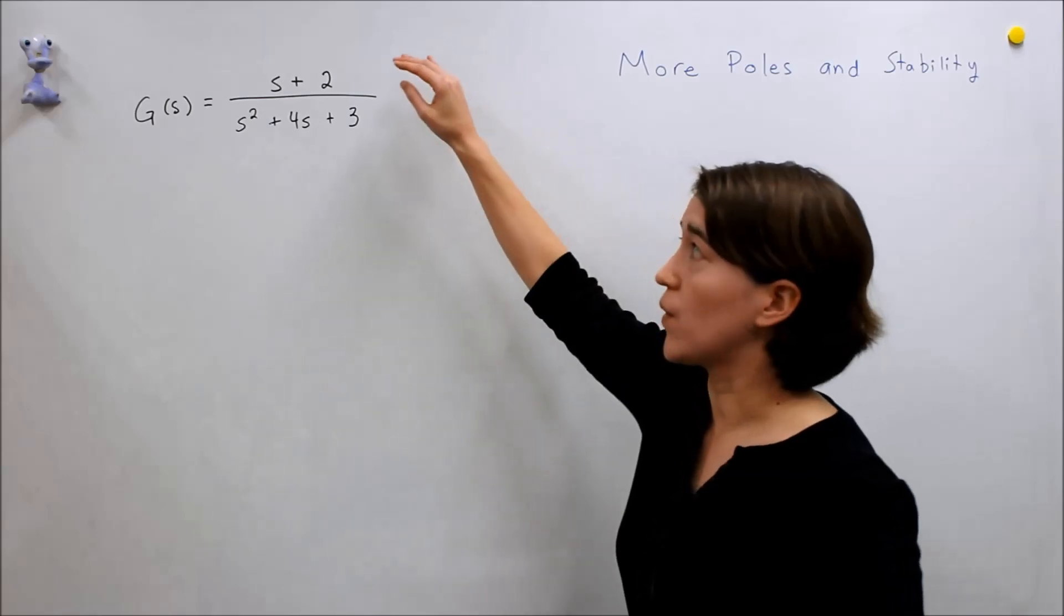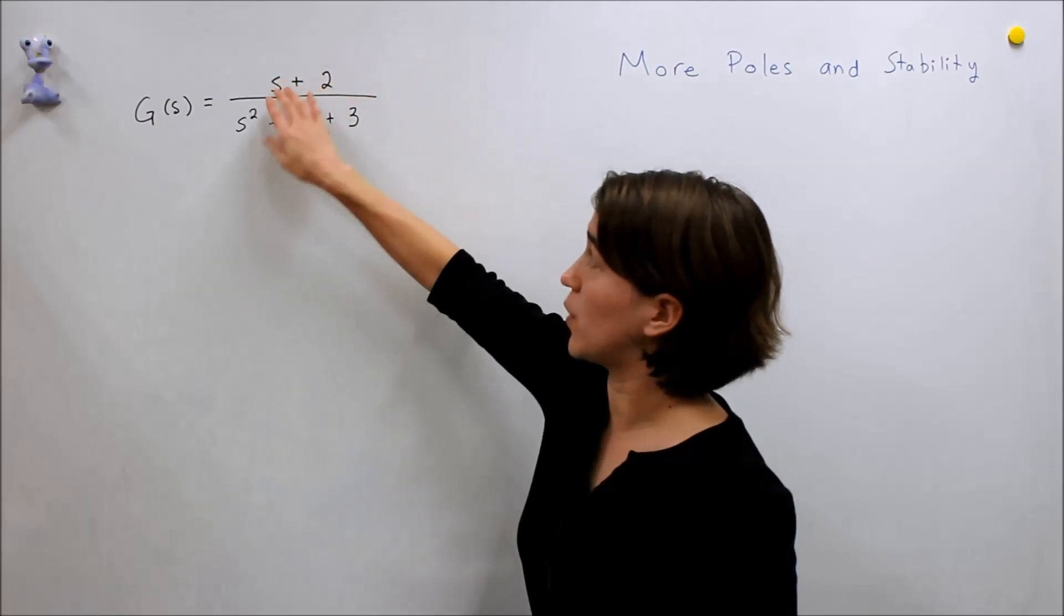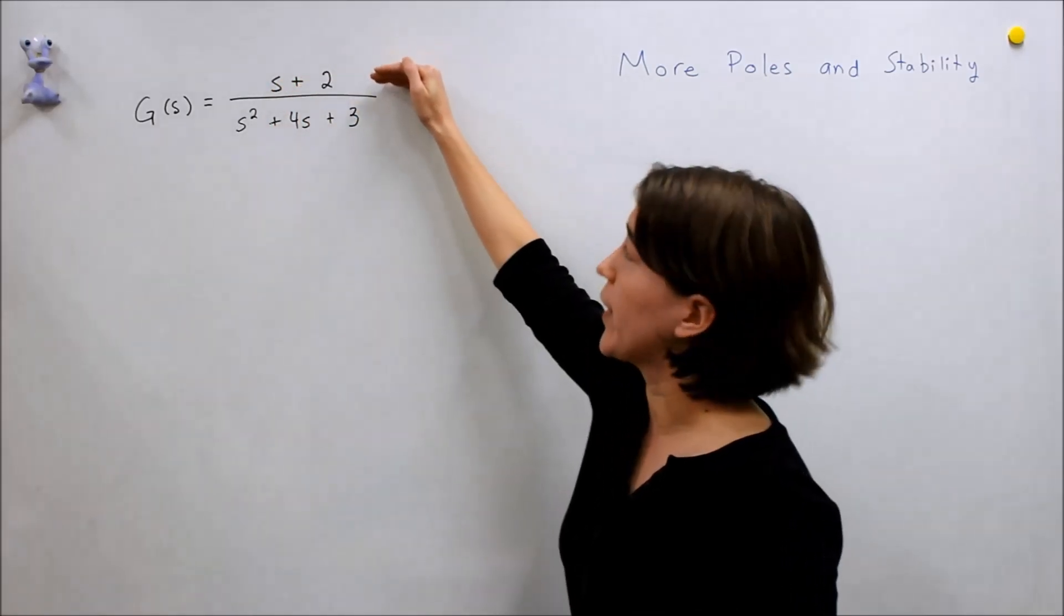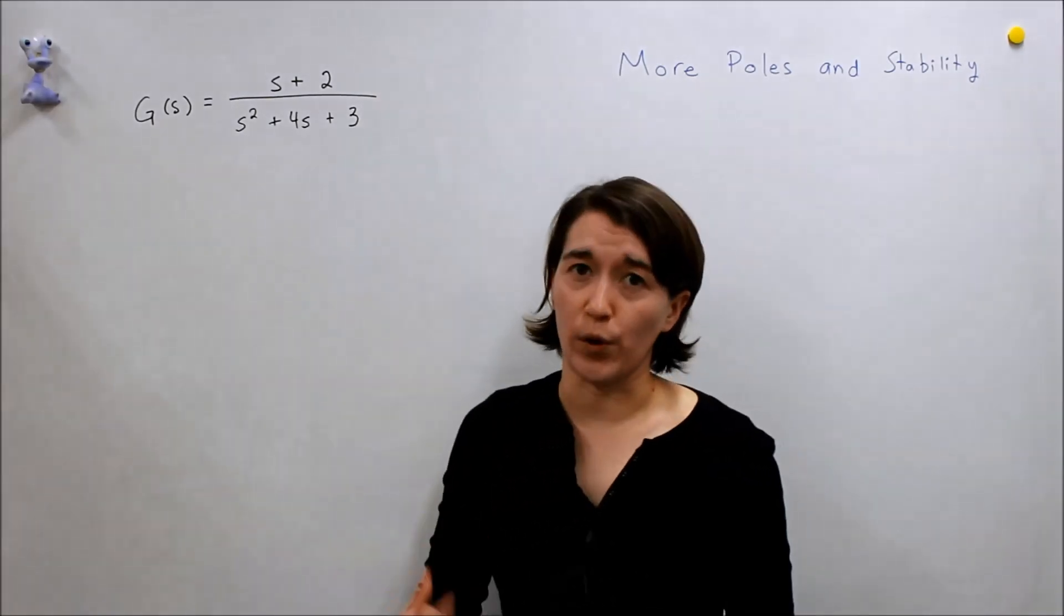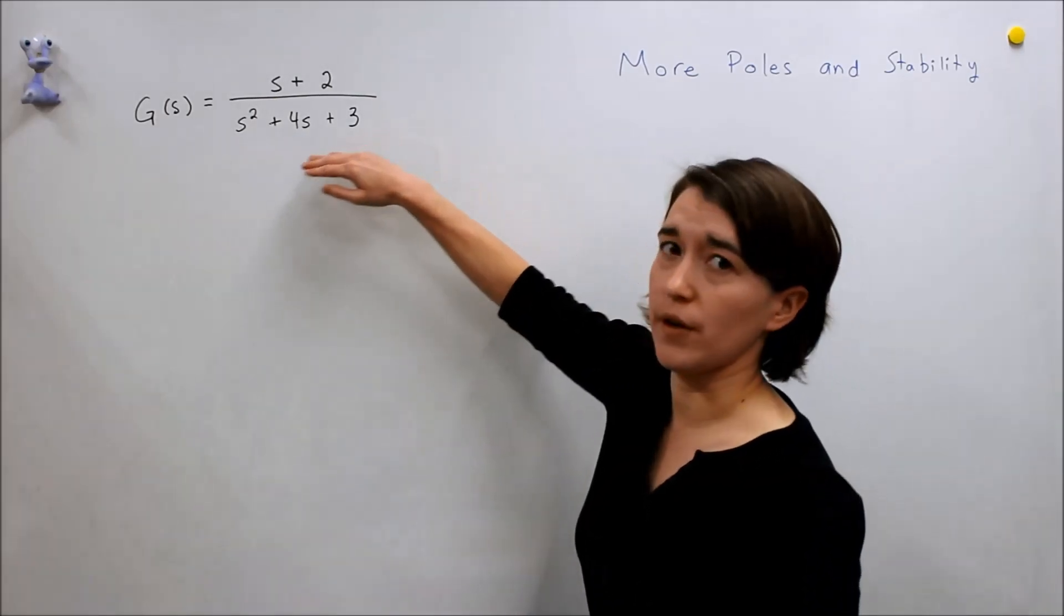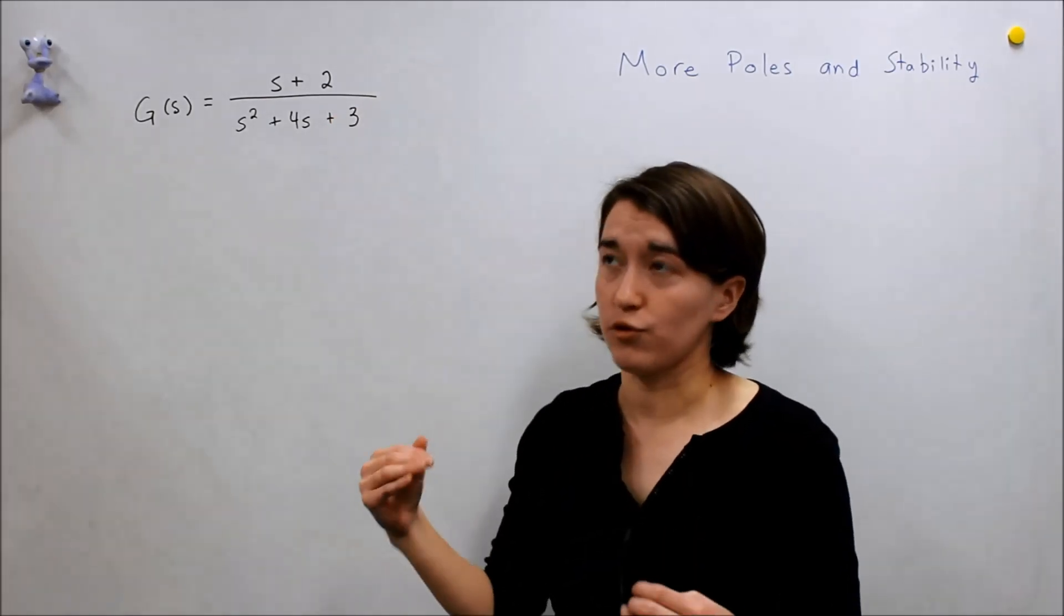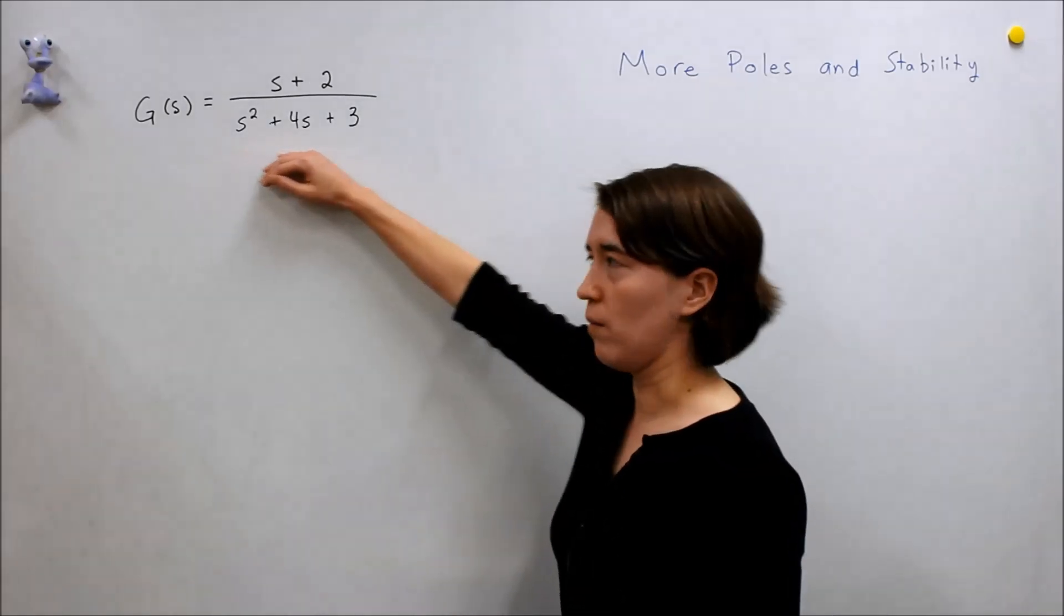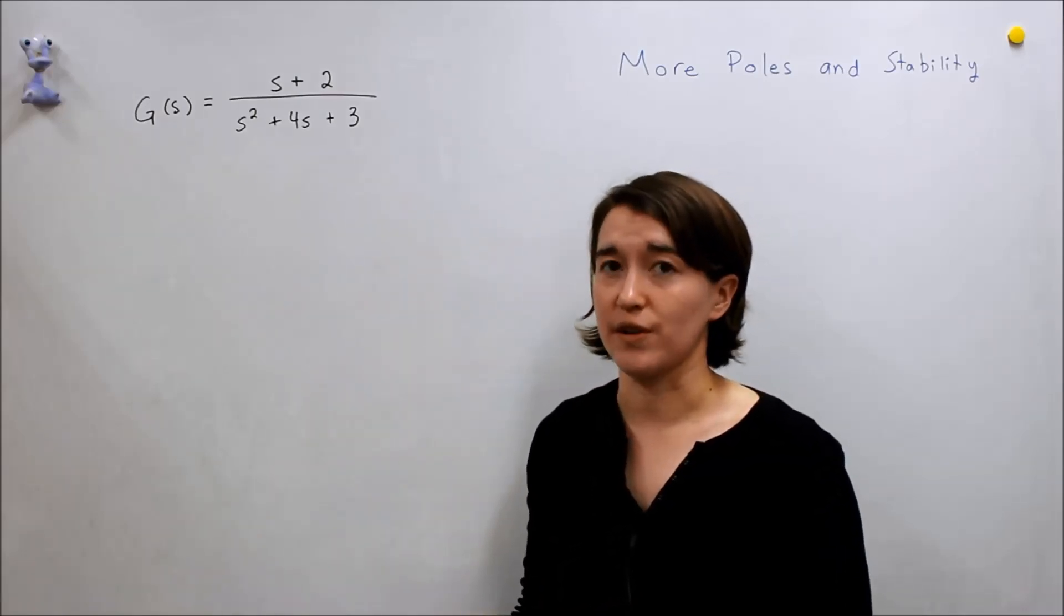I want to make a note about the form that we have here. We have a system with s to the first, so a first order system in the numerator, and this is second order in the denominator. In almost all the systems we'll be working with, we have the order of the denominator higher than that of the numerator. We call that a strictly proper transfer function, and we'll be dealing almost always with those types of systems. When we have those systems, we can make some generalizations.